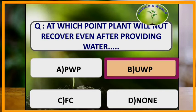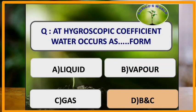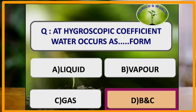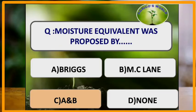Hygroscopic water is present only in vapor form. At the ultimate wilting point, the plant will not recover even after providing water. The water potential at ultimate wilting point is minus 60 bars. At permanent wilting point the plant will recover if water is provided, but at ultimate wilting point the plant does not recover even after water is provided.